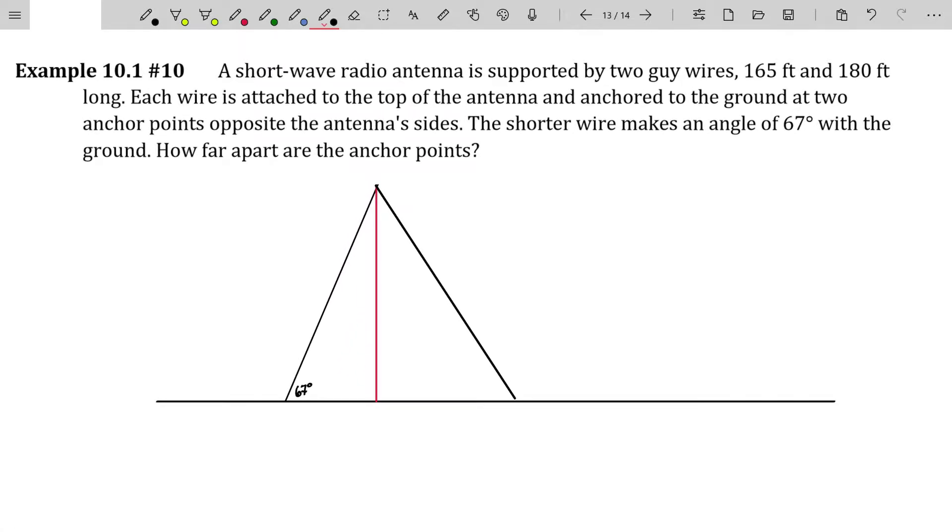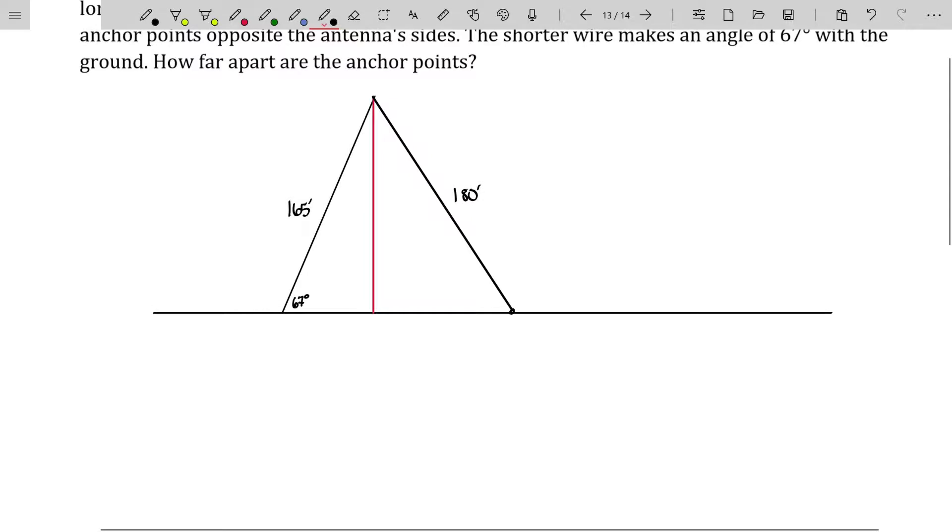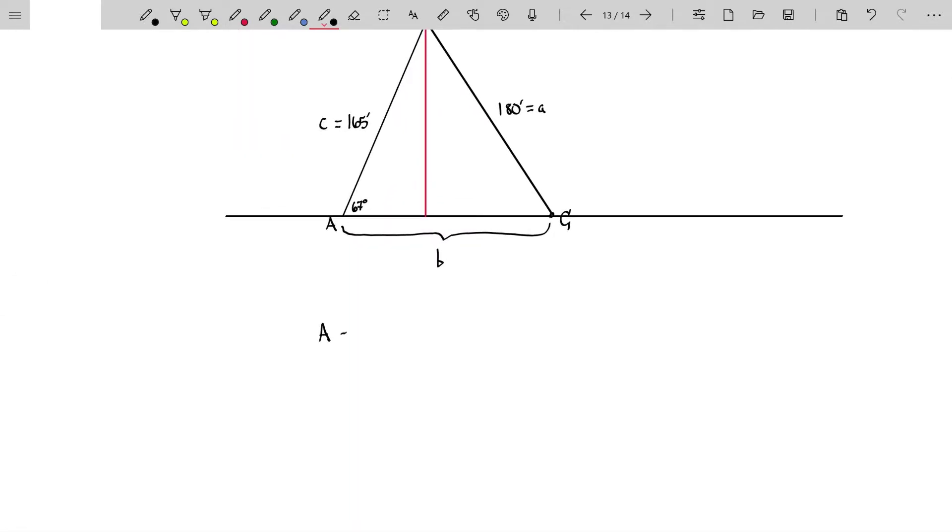The longer wire is going to be 180 feet. The anchor points are on opposite sides of the antenna. So we want to find out what's this distance. I'll call this angle A, angle B, angle C. This will be side C because it's opposite angle C. This will be side A because it's opposite angle A, and this will be side B. So we want to know what is side B.